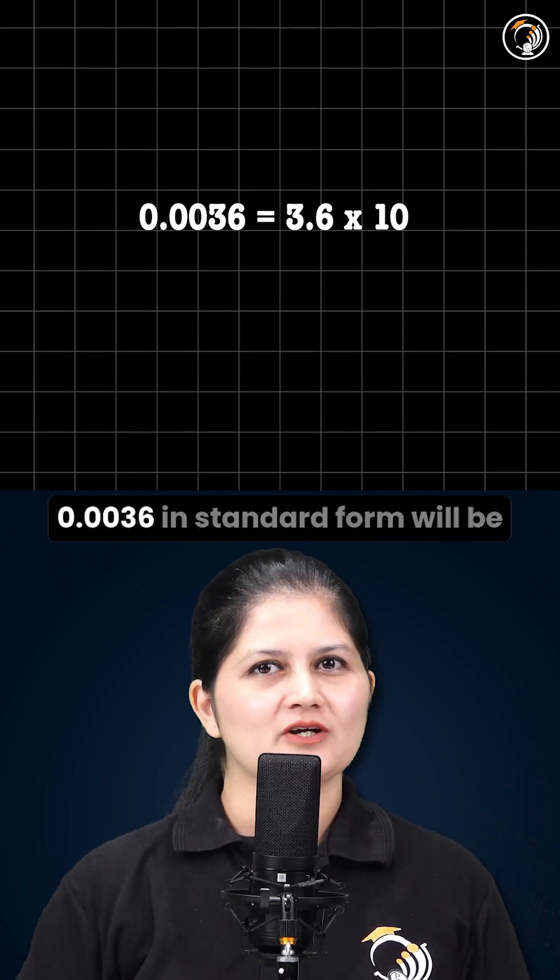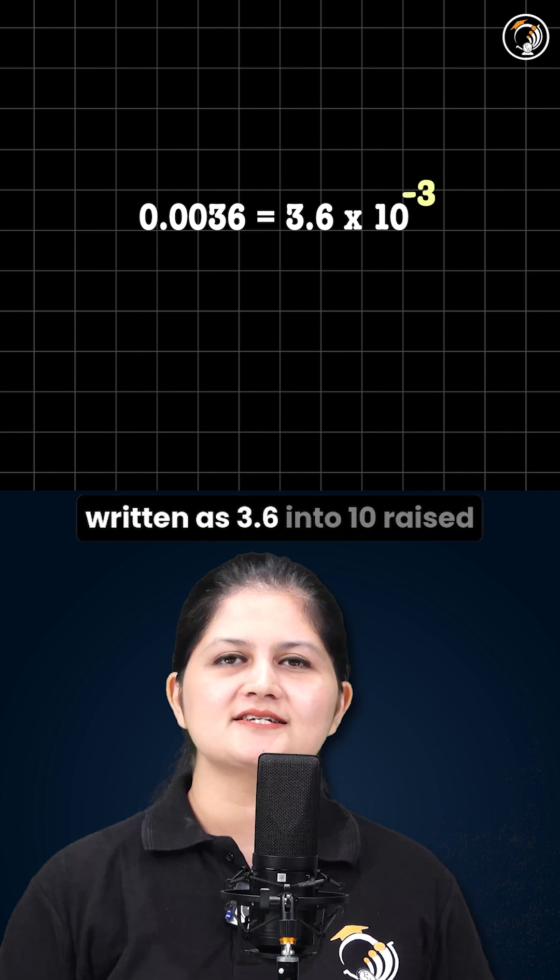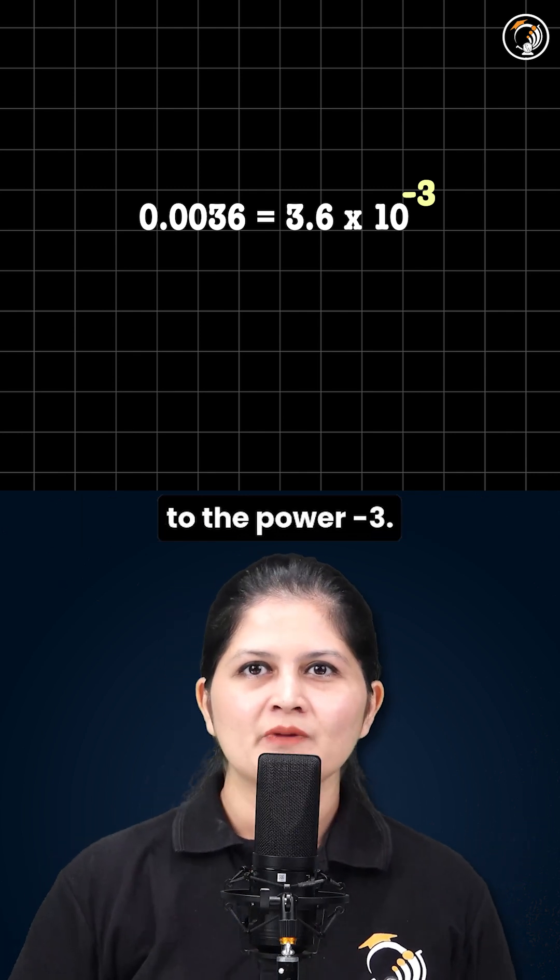0.0036 in standard form will be written as 3.6 into 10 raised to the power minus 3.